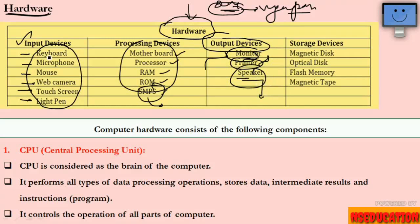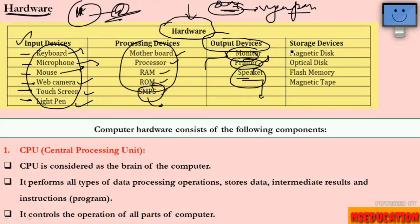For input, keyboard is used to give input. Microphone — like I am recording now using a microphone. Mouse also gives input — for example, I gave an instruction by clicking. Similarly, camera and touch screen are all input devices.